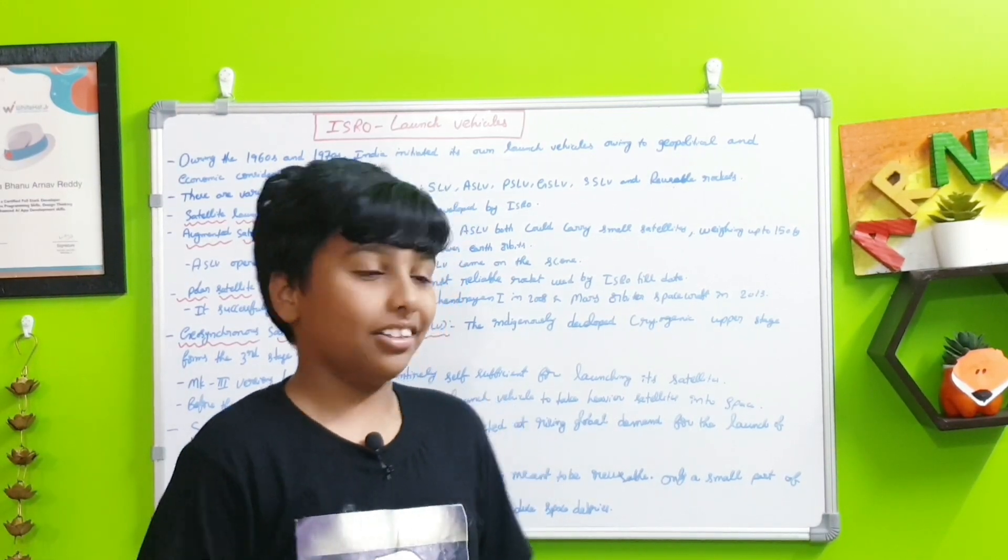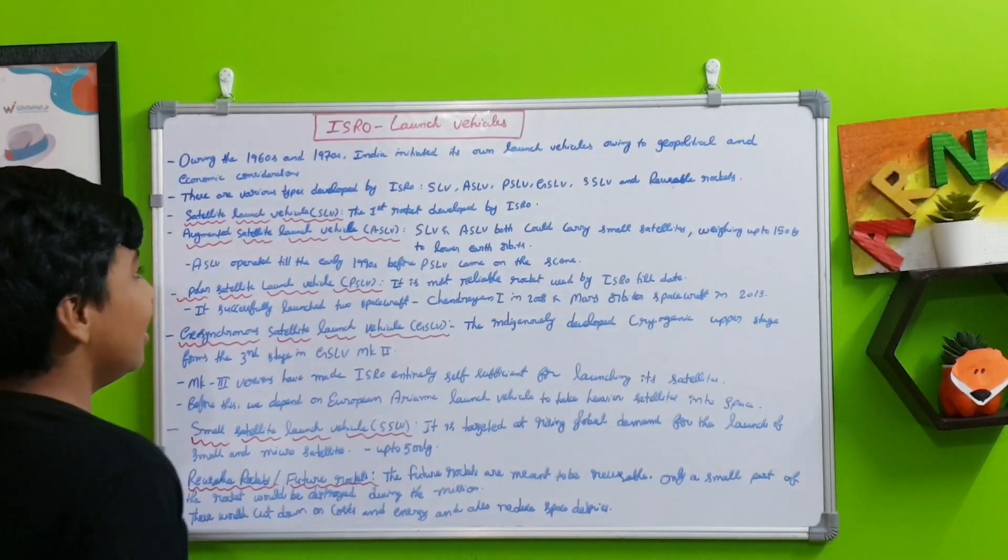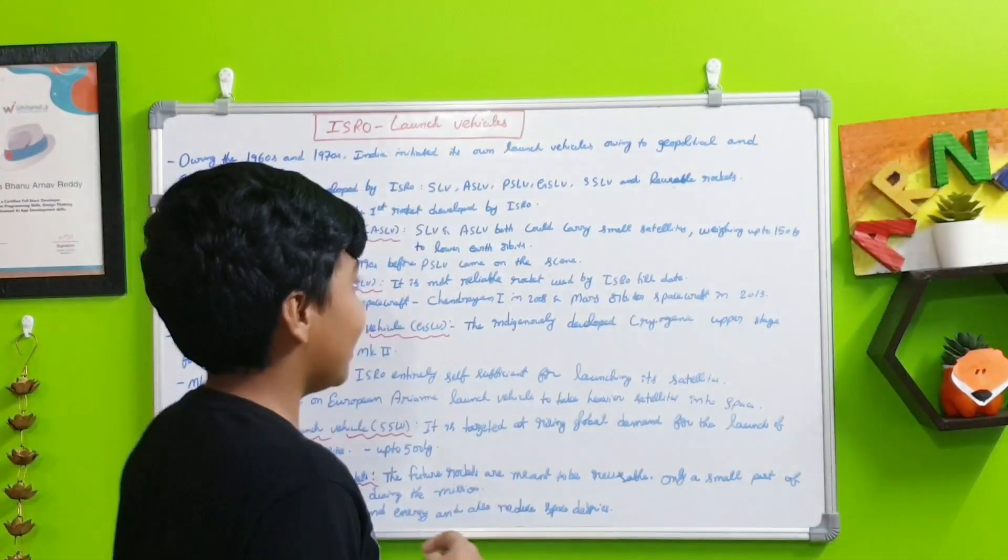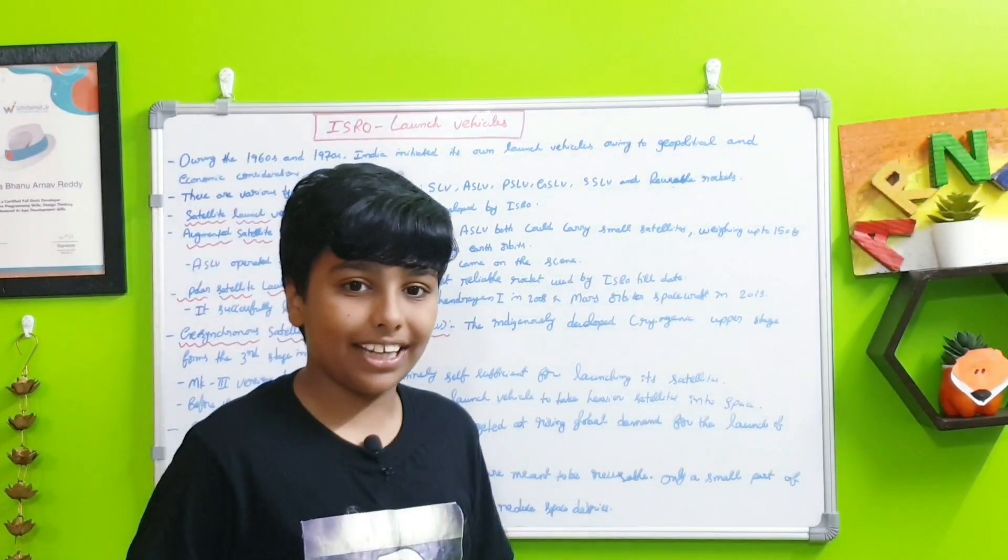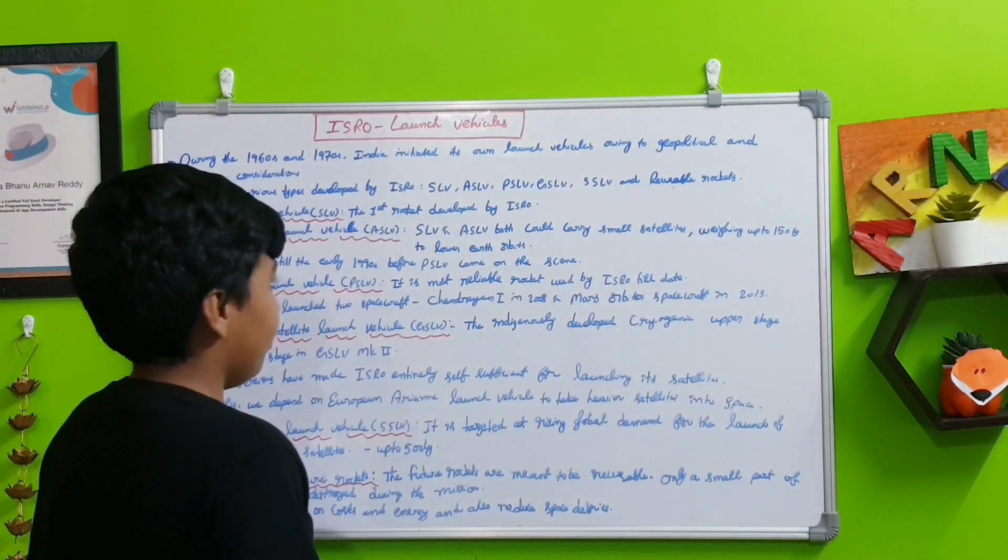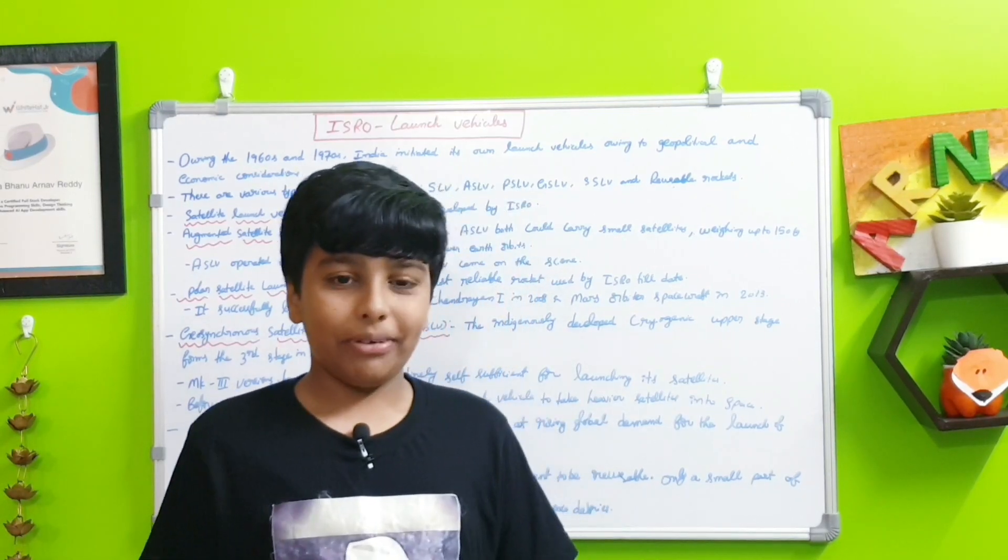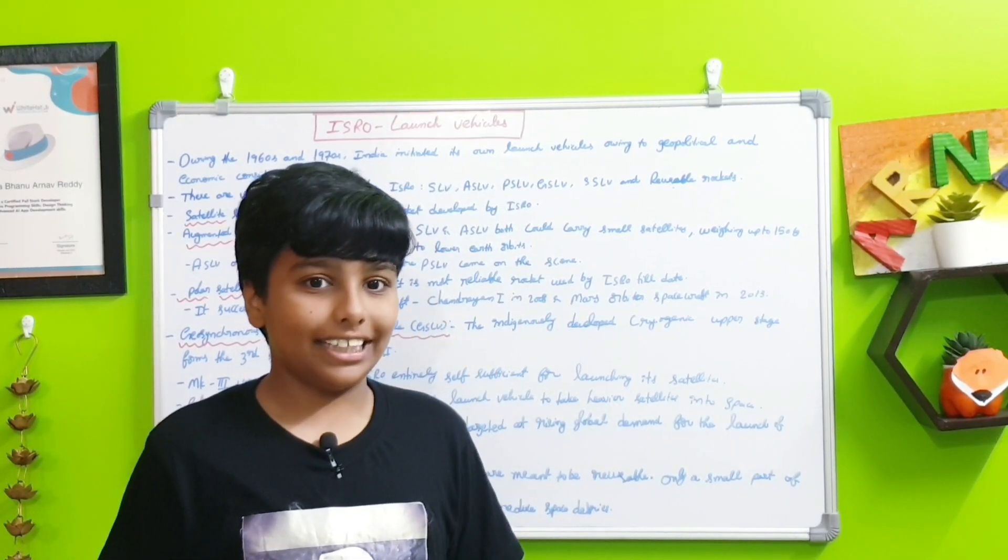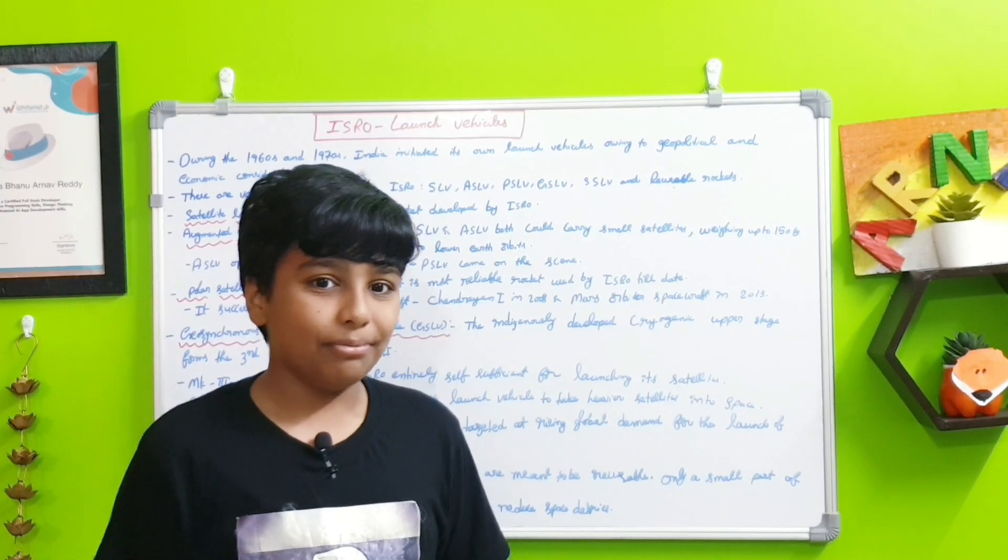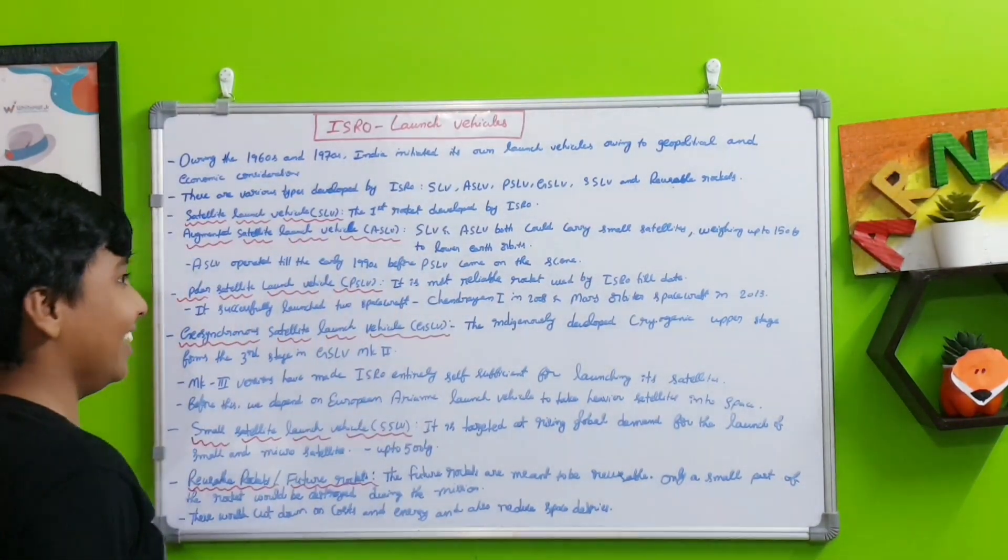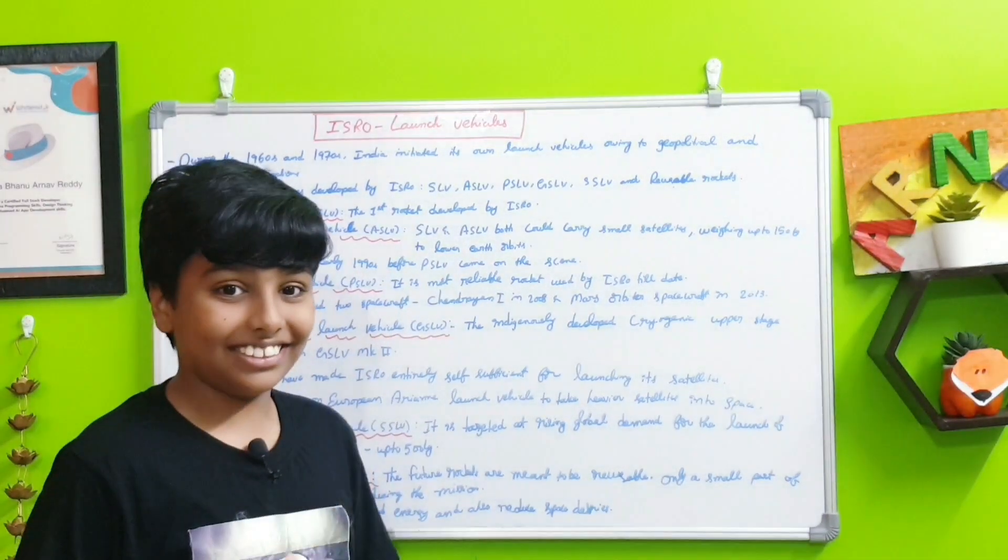The SLV and ASLV can only carry satellites weighing up to 150 kilograms to lower earth orbit. You may think 150 kilograms is very heavy, but in rocket terms it is very light. Most rockets have like 3000 kilograms of payload—3 tons.